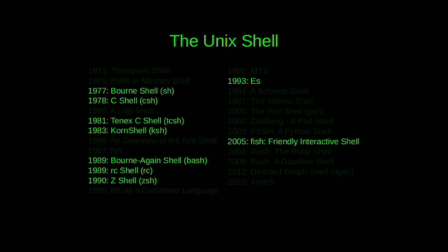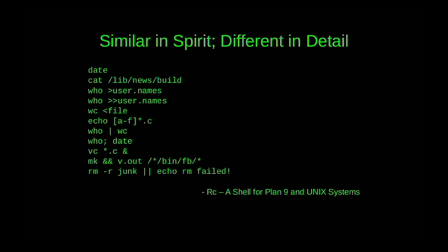Those four families pretty much define what people expect when they say Unix shell. Tom Duff, in his paper on the RC shell, has a great introduction saying RC is similar in spirit but different in detail from the Bourne shell, with a list of commands that behave as expected. And I think everyone would agree — that's what you expect from a Unix shell: run a command, pass an argument, redirect output, redirect input, globs, piping. The syntax may differ slightly between shells, but the capabilities are there.